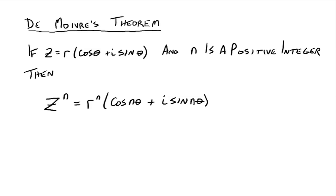All of that leads to what is called De Moivre's theorem. If we have a complex number Z written in trigonometric or polar form as R times cosine theta plus i sine theta, and N is a positive integer, then Z to the N is equal to R to the N times the cosine of N theta plus i sine N theta.